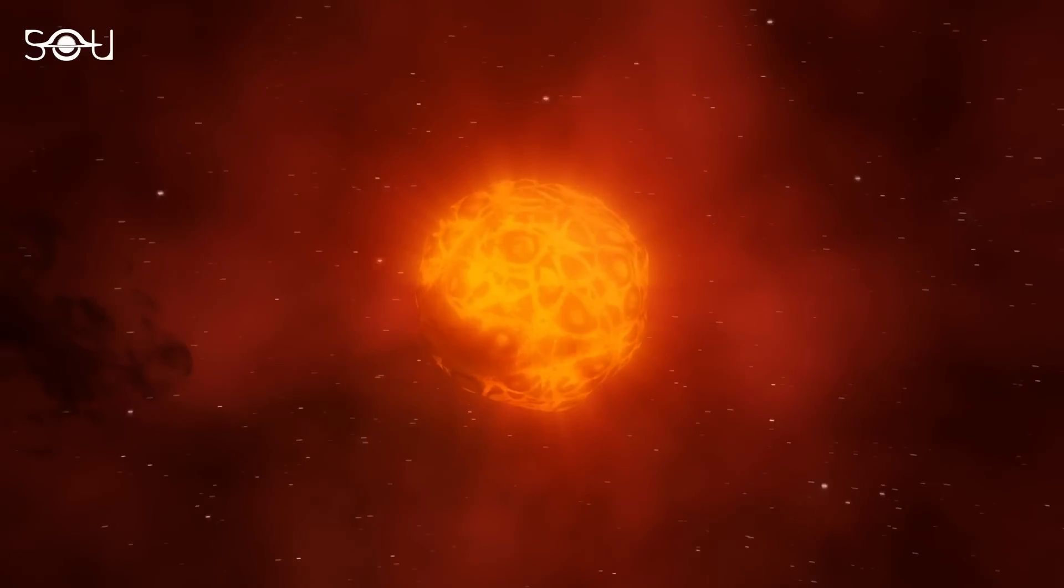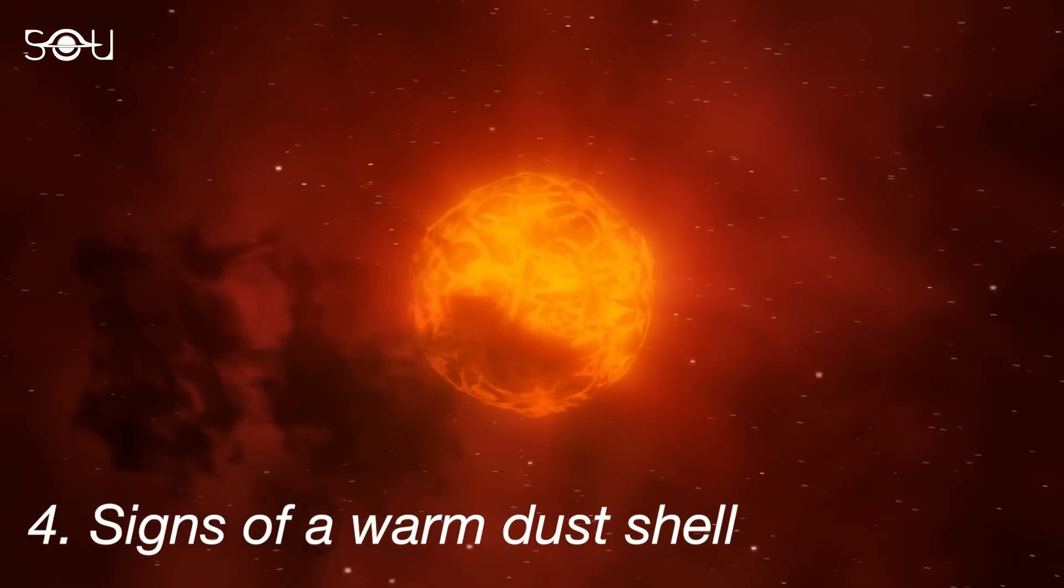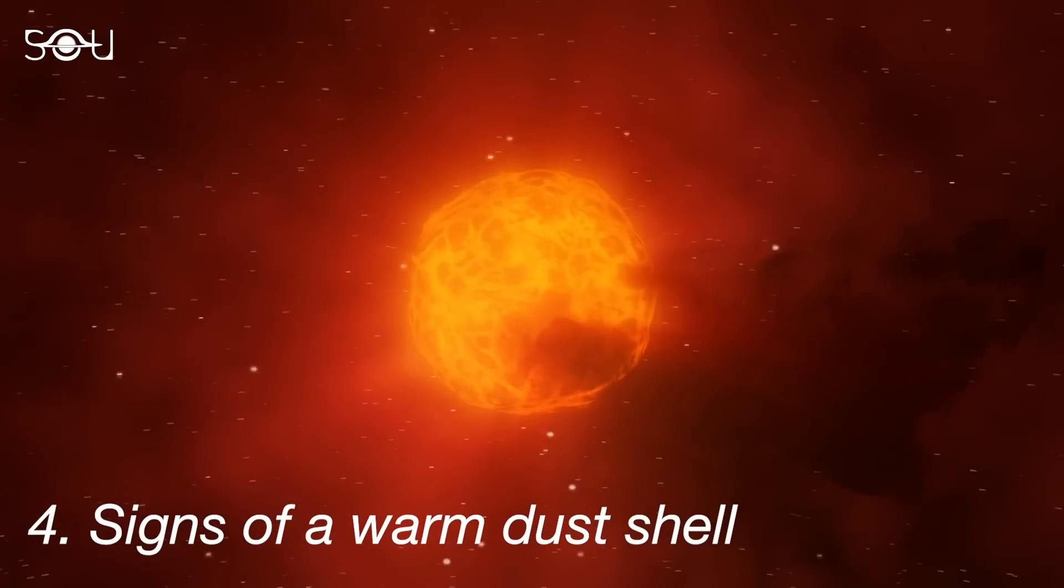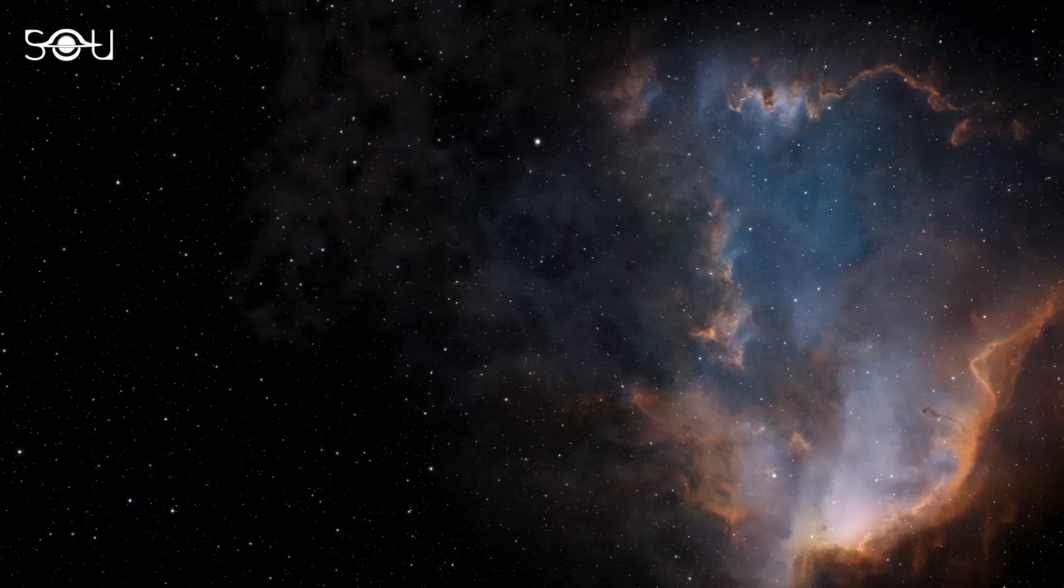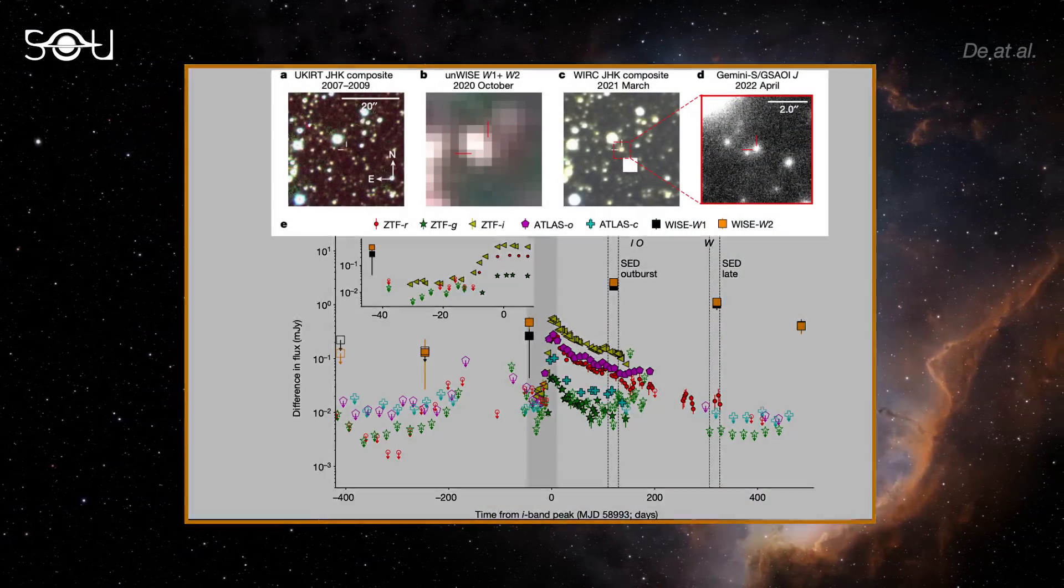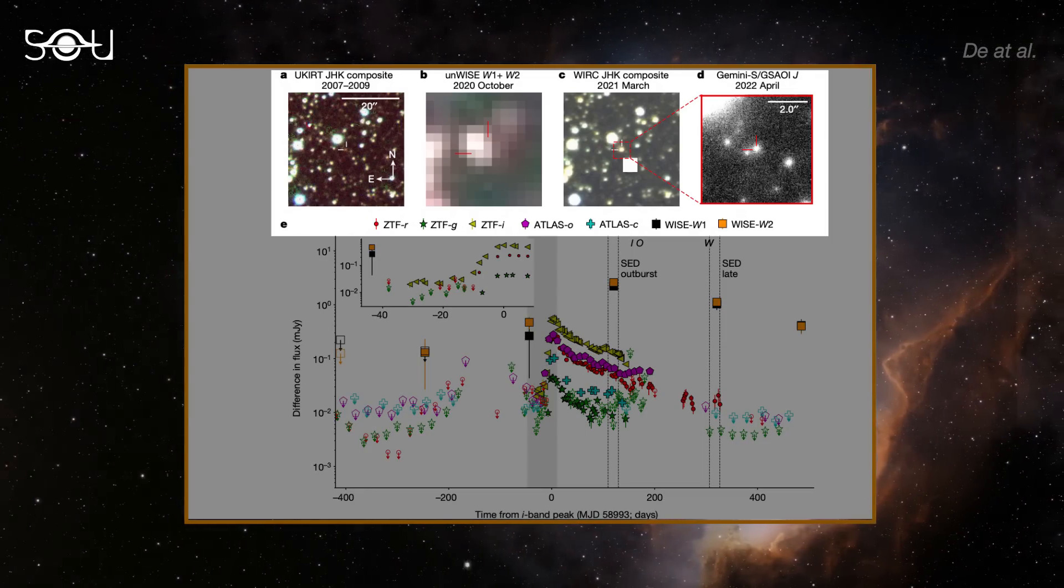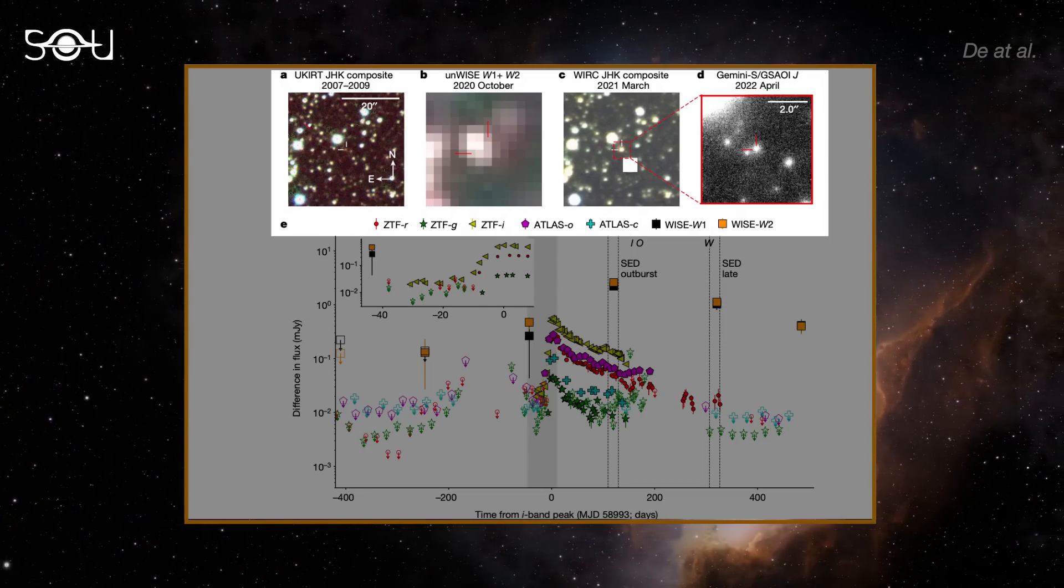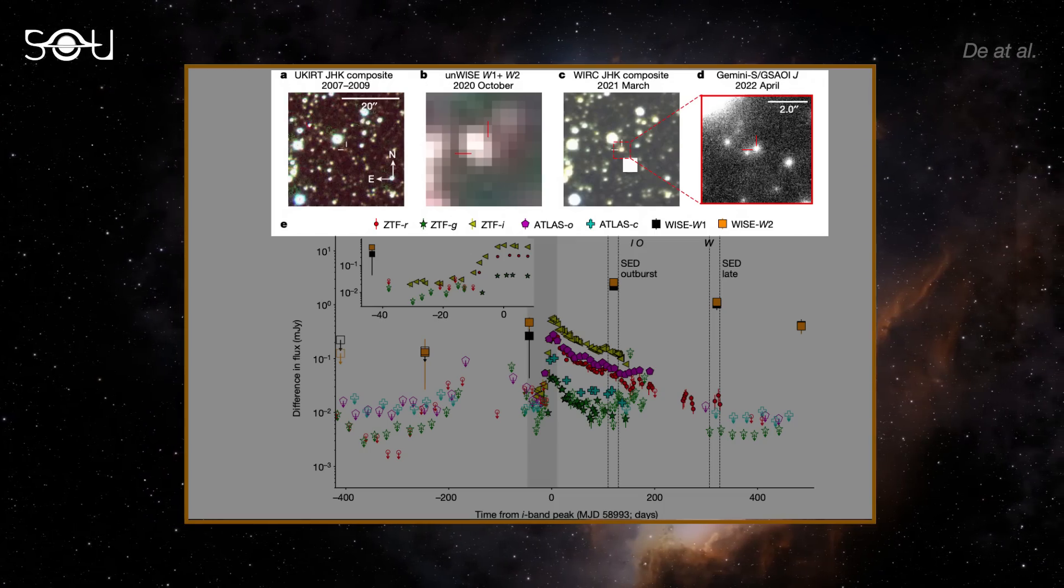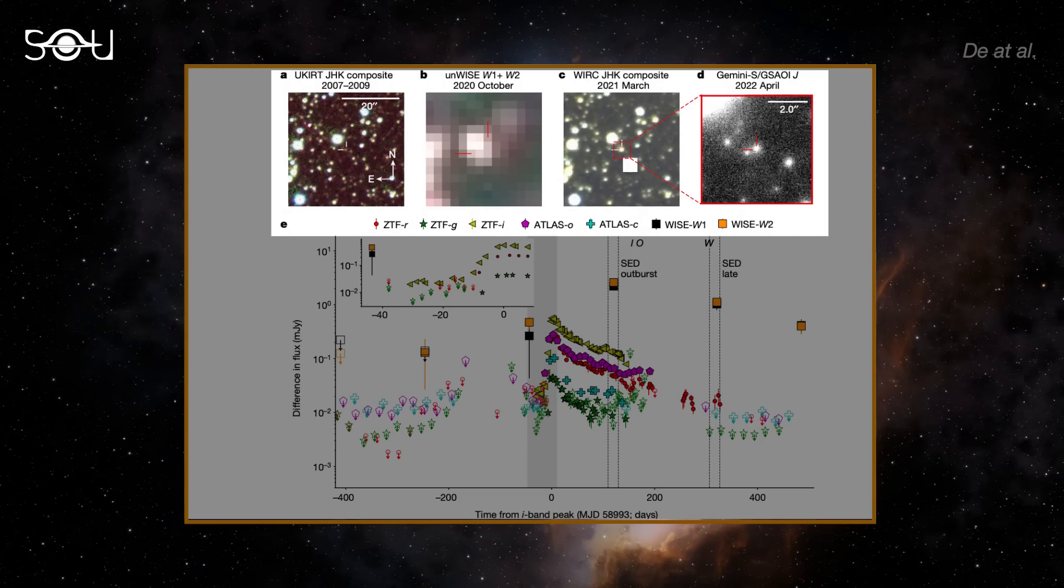And finally, the observation of mid-infrared emission suggests the presence of a warm dust shell surrounding the star, providing further evidence in support of a star swallowing its planet. Have a look at this figure from the research paper. These images showcase the star in near- and mid-infrared light at various stages. A closer inspection reveals a noticeable difference in the star's size between images A and C, indicating its transition into the red giant phase.